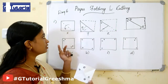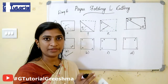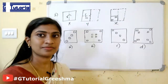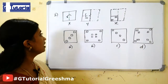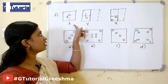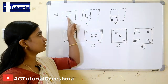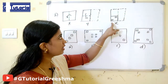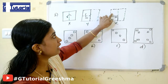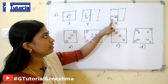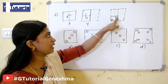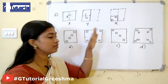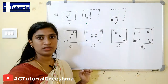If you are solving more problems, you will be clear with this topic. We can move on to the second question. Here the paper is folded in this direction, then again it is folded in this direction, and finally the figure will be like this. Then two square cuts are made in the paper. By unfolding this, what will the figure be? This is the question.